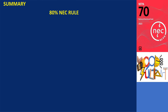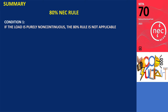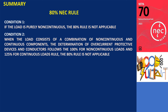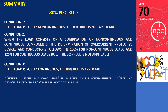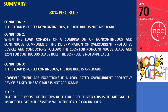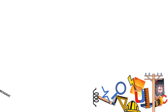In summary, the 80% rule specified in the NEC applies only in specific scenarios. If the load is purely non-continuous, the 80% rule does not apply. When the load is a combination of non-continuous and continuous components, overcurrent protective devices and conductors follow the 100% for non-continuous and 125% for continuous loads rule, excluding the 80% rule. The 80% rule is only applicable when the load is entirely continuous. However, if a 100% rated overcurrent protective device is used, the 80% rule does not apply. The purpose of the 80% rule for circuit breakers is to mitigate the impact of heat in the system when the load is continuous. Thank you all for watching.